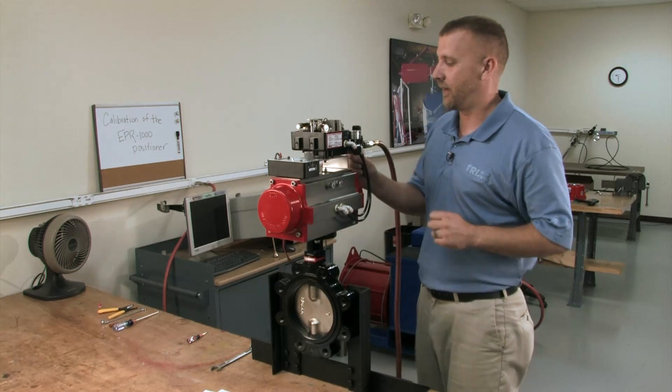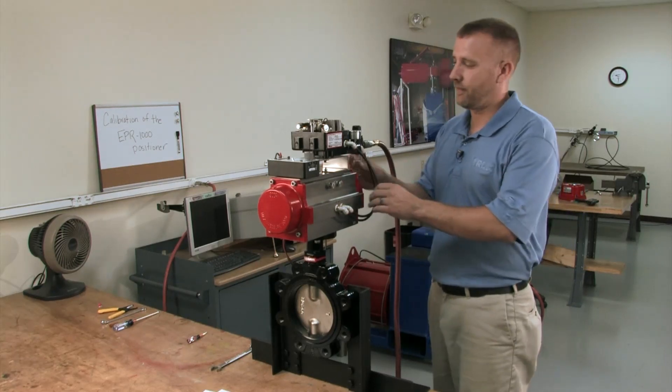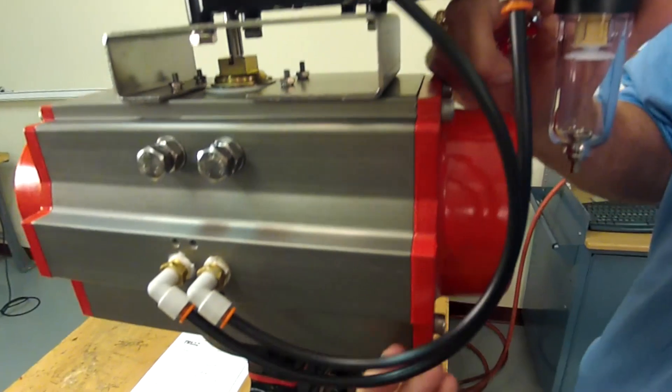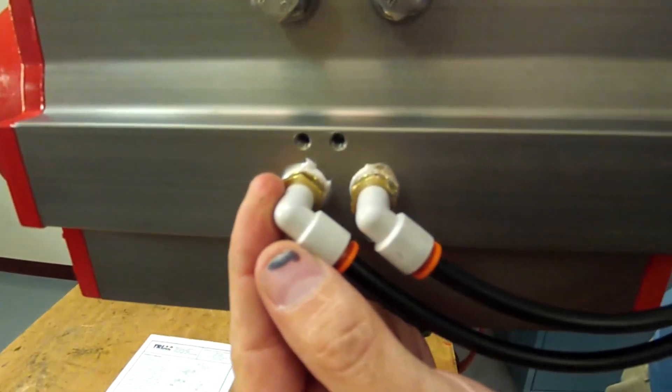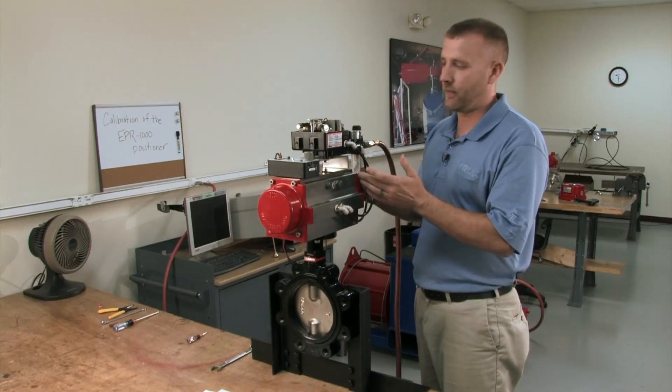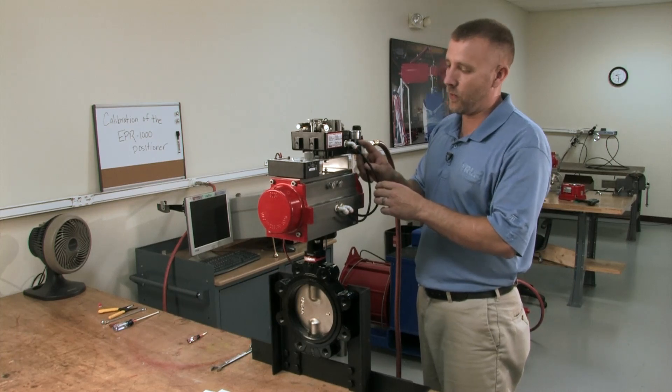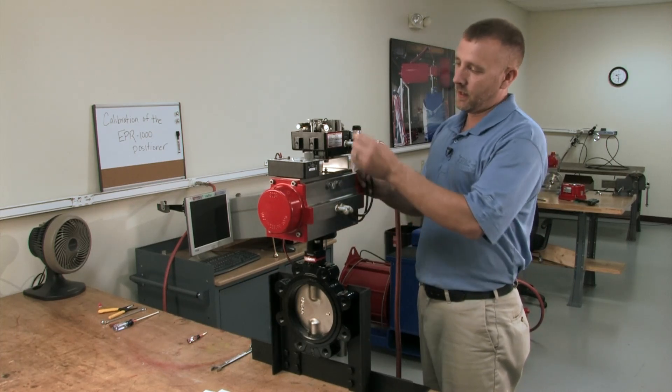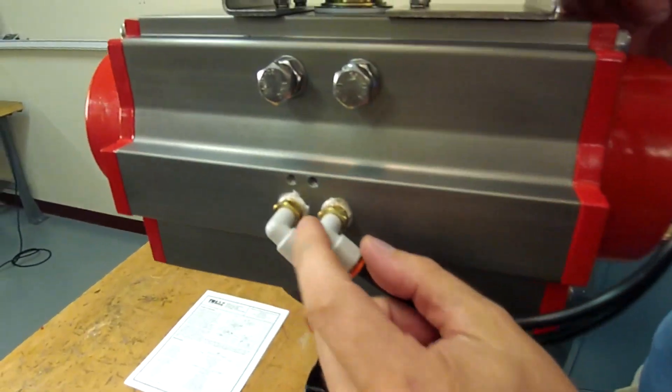Just one more thing I'd like to explain is your tubing on your actuator. Your OUT1 port goes to your counterclockwise drive port on your actuator. That would be for single acting. Like I said, we tube it up for double acting. So, your OUT1 goes to your counterclockwise and your OUT2 goes to your clockwise port.